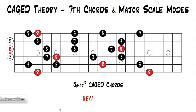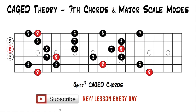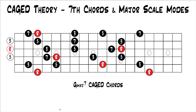When we're talking about triad chords, you had the major chords and the minor chords. The major chords work with the Ionian mode, the Lydian mode, or the Mixolydian mode. And the minor chords work with the Dorian mode, the Phrygian mode, or the Aeolian mode. Now we're going to look at seventh chords. It changes things up a little bit because you have two different types of major chords: major seventh and dominant seventh. I'm going to show you how those fit using the cage chords with the major scale modes.